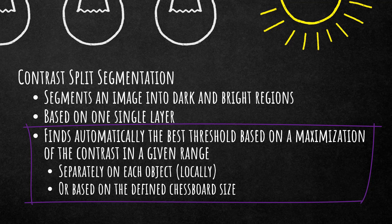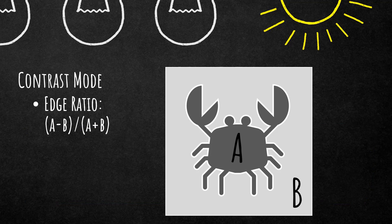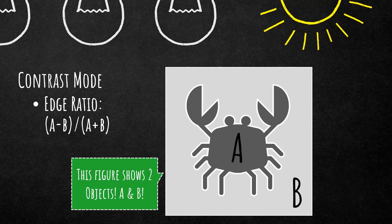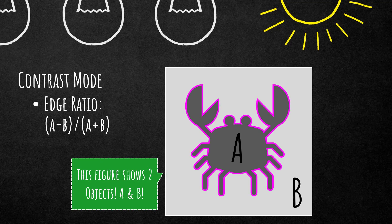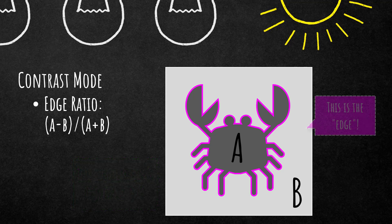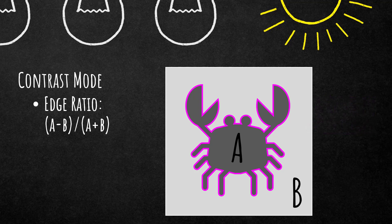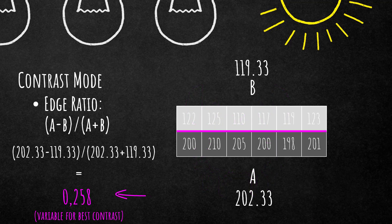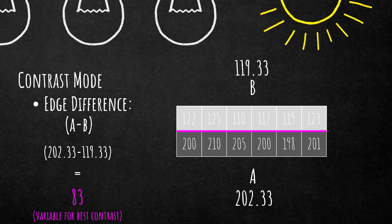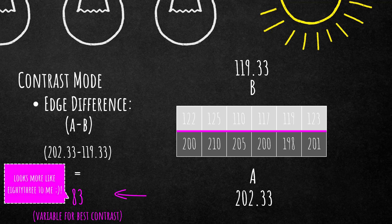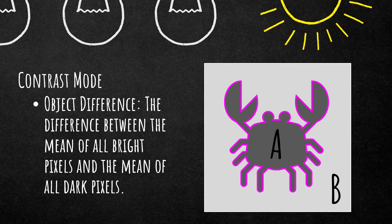One important setting is the contrast mode — there are three different ones. The first is edge ratio, which looks at the boundary of your object and calculates contrast based on pixel values around the outlines. The second is edge difference, which simply subtracts B from A at the edges. The third is object difference, which looks at the difference between the mean of all bright pixels and the mean of all dark pixels in the resulting objects.